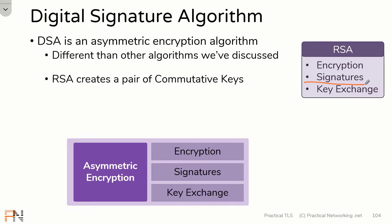We can use RSA for signatures by doing sort of the inverse: hashing the message we want to sign, encrypting it with our own private key, and sending it across the wire, and the other side can validate the signature with the public key. We can also use RSA to do a key exchange by using that encryption mechanism to send across a seed value to generate keys. So RSA can be used for all three asymmetric encryption functions.